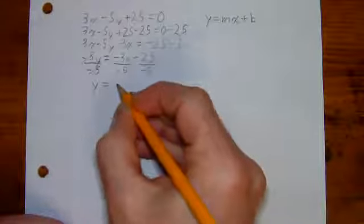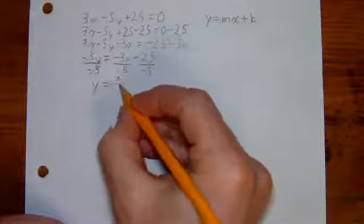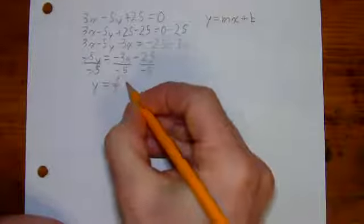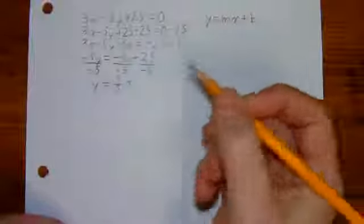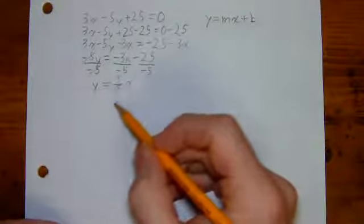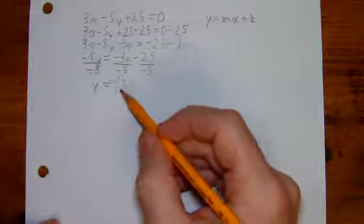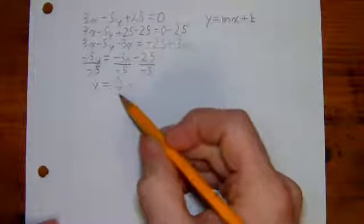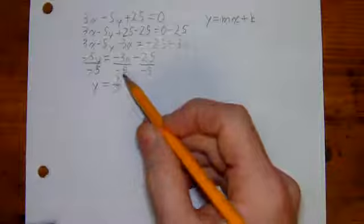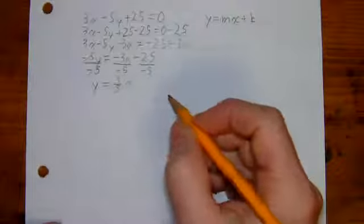And then here, negative divided by negative is positive. So this is 3 over 5. And you could put that as a decimal. But remember, when we're working with linear equations, we want to keep things exact. And that means usually keeping things as a fraction. This one actually will turn out as an exact decimal as well. But it's a good habit to just keep it as a fraction.